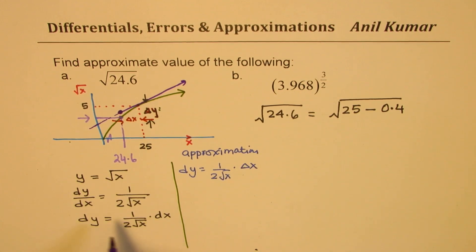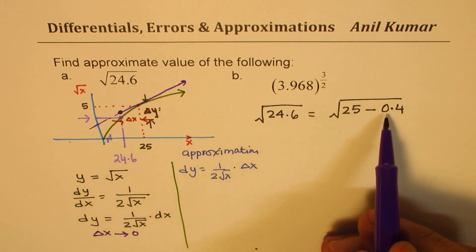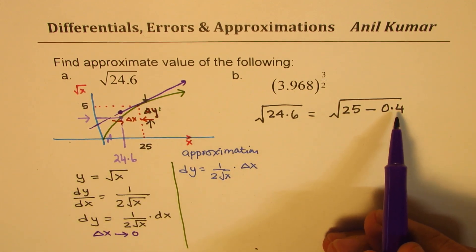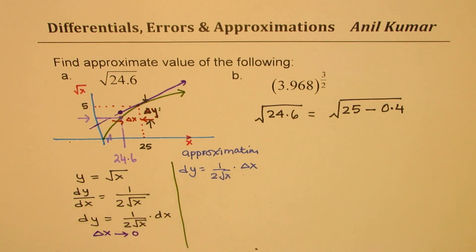In this case, we are saying delta x is approaching 0. But actually speaking, we have taken delta x as 0.4. So with this, we get an idea of what delta y could be. So let us see how to apply this method and find our solution.